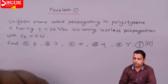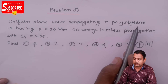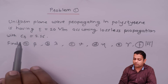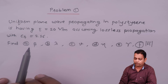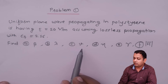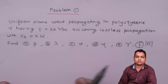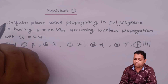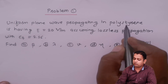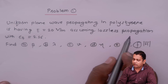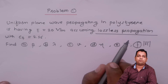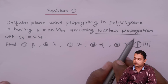The problem statement: a uniform plane wave propagating in polystyrene has E equal to 20 volts per meter, assuming lossless propagation with epsilon_r equal to 2.56. Find beta, lambda, v, eta, gamma, and the magnitude of H. We have a uniform plane wave propagating in polystyrene, and since we are assuming lossless propagation, the formulae for the perfect dielectric medium apply.